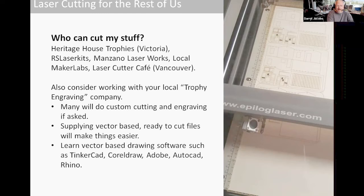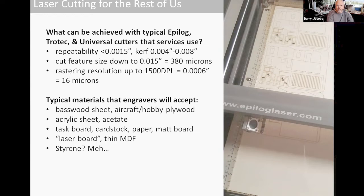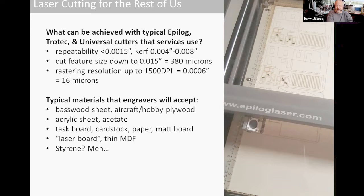You need to learn vector drawing programs — things like TinkerCAD, CorelDraw, AutoCAD. We use Rhino, which is a fairly good production program but it's kind of costly. What can you achieve with typical trophy-shop lasers? We use Epilogue lasers, but things like Trotec or Universal lasers are what to look for. You can get repeatability down to about one thousandth of an inch. The kerf is typically anywhere from four to eight thousandths of an inch using a 1.5-inch lens. You can get feature sizes down to about 15 thousandths of an inch without burning edges, so fine mullions on windows can be done at about 15 to 20 thousandths of an inch.